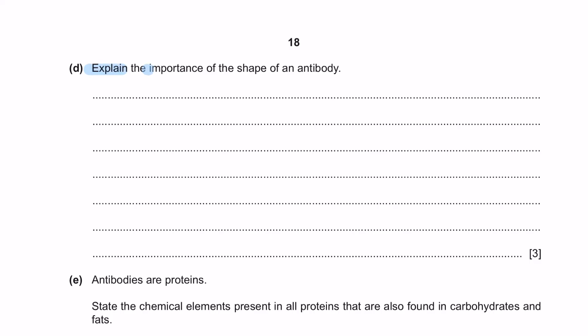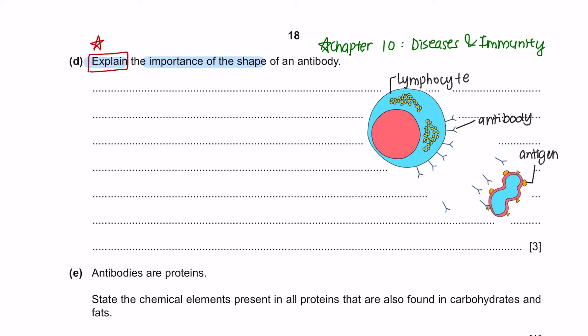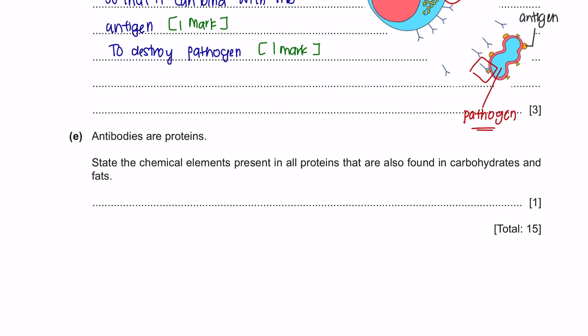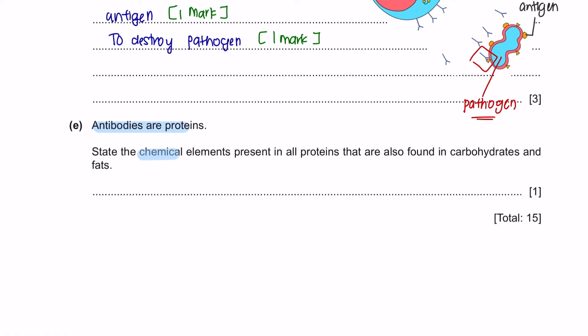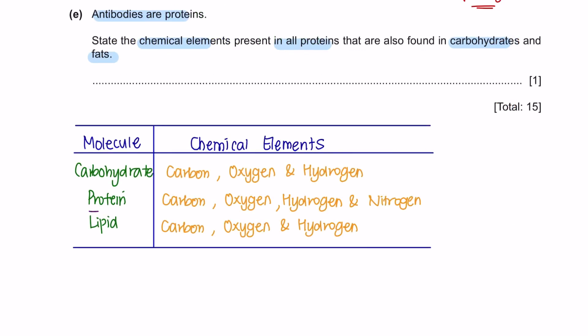Question D. Explain the importance of the shape of an antibody. Your command word here is explain so make sure you give a detailed answer. You will learn about antibodies and antigens under Chapter 10 Diseases and Immunity. Antibodies are produced by lymphocytes to fight off a pathogen. The shape of the antibody is very important as it has to be complementary to the shape of the antigen, so that it can bind to the antigen and destroy the pathogen. Next, antibodies are proteins. State the chemical elements present in all proteins that are also found in carbohydrates and fats. The chemical elements in protein that can also be found in carbohydrates and fats are carbon, oxygen and hydrogen.